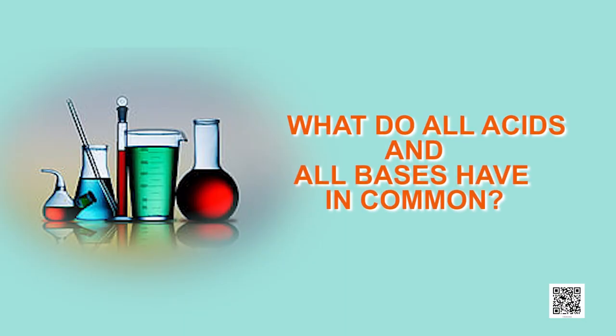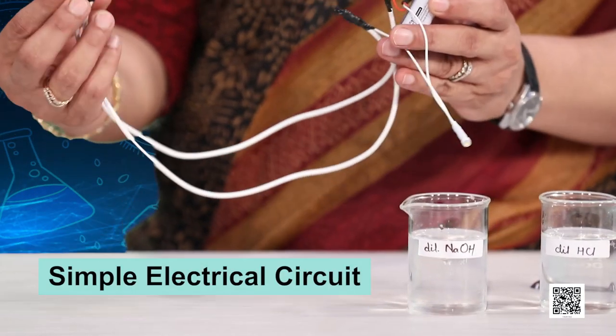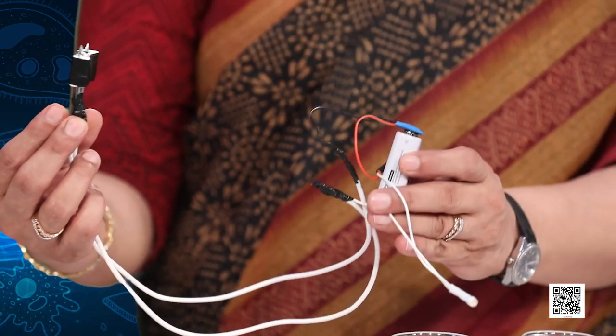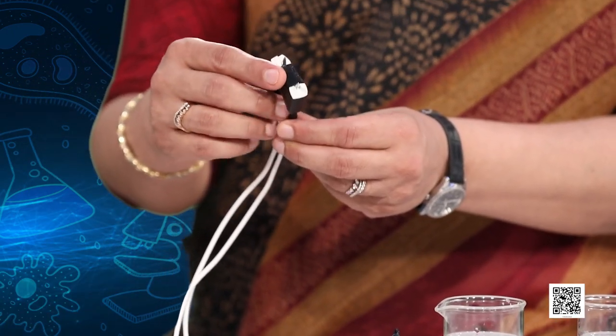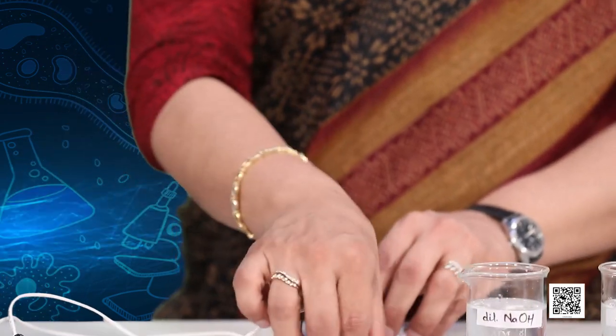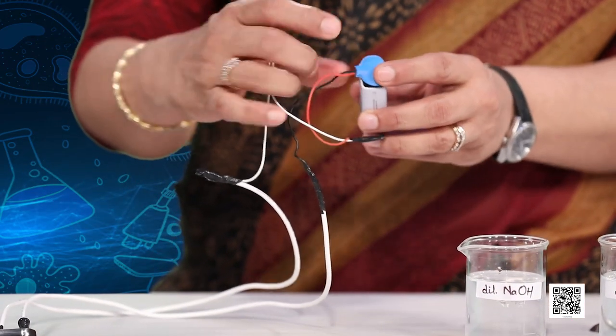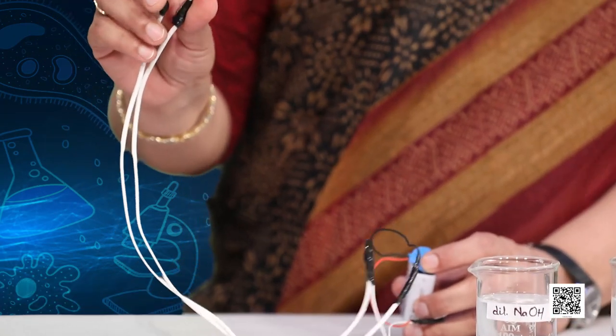Hello my dear young scientists. Till now we have learnt the differences in the properties of acids and bases according to their chemical reactions. Now we should see whether they have something in common. Do they have any property regarding electrical properties? For this purpose I have made one simple electrical circuit. You have learnt how to make electrical circuits in your previous classes. I have got two nails, a connecting wire, an LED and a battery to join the circuit. Right now the circuit is open.